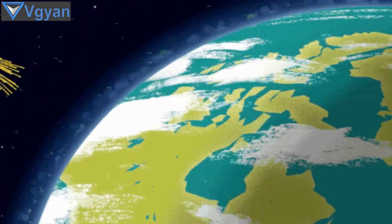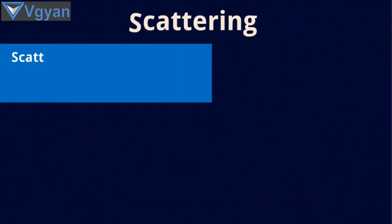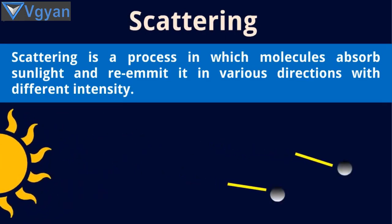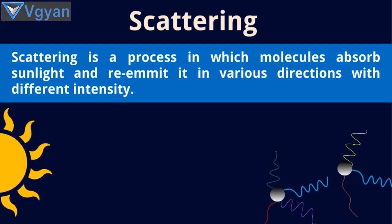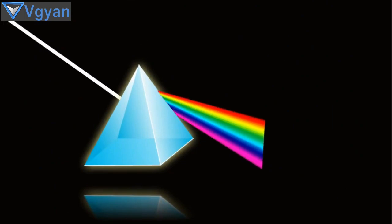So when sunlight enters the atmosphere of Earth, it gets scattered by these gases. Scattering is a process in which molecules absorb sunlight and re-emit it in various directions. As we know, sunlight or white light is made up of seven colors, that is VIBGYOR.